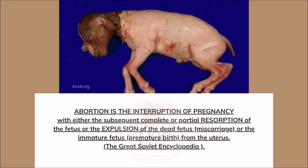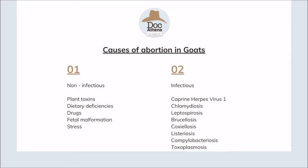Let's start by defining what abortion is. According to the Great Soviet Encyclopedia, abortion is the interruption of pregnancy with either the subsequent complete or partial resorption of the fetus, or the expulsion of the dead fetus or the immature fetus from the uterus. There are two causes of abortion in goats: non-infectious and infectious.